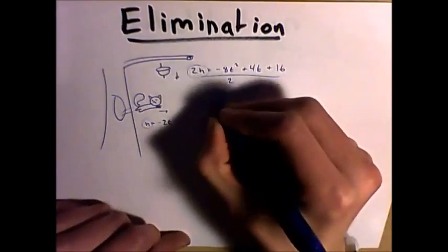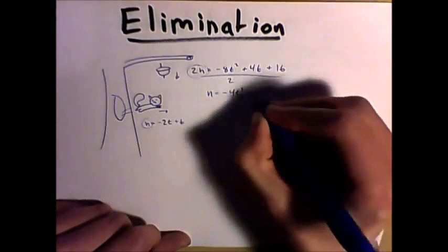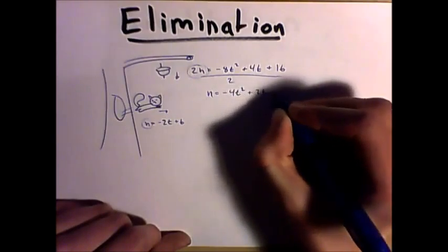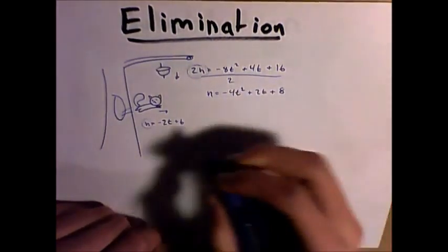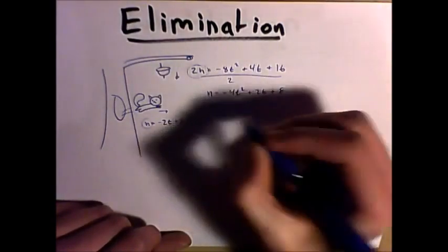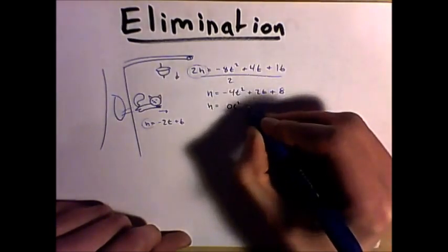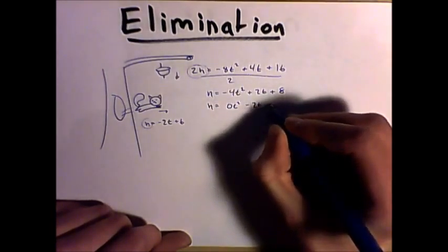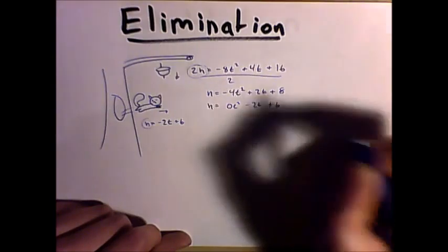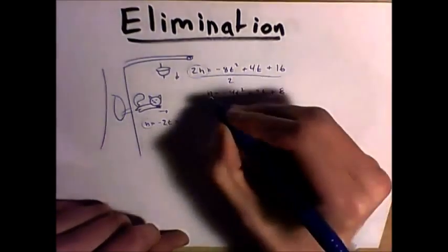We'll divide this by 2, which will give us h equals negative 4t squared plus 2t plus 8. Now we'll subtract this equation from that equation, and we'll set this up like h equals 0t squared minus 2t plus 6. Then we can subtract these values from each other.